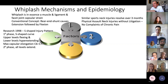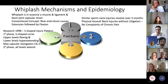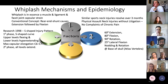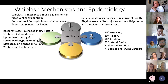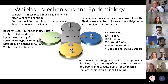Similar injuries in sportsmen and women tend to resolve over three months, and in cases of physical assault where there's no litigation, there are no particular complaints of chronic pain. The range of movement in the neck is 60 degrees of extension, 80 degrees of flexion — you should almost be able to touch your chin on your chest — 90 degrees of rotation, and 25 degrees of lateral flexion, with nodding and rotation taking place mainly at the base of the skull on the atlas vertebra. In Lithuania, there's no expectation of symptoms or disability, and only a minority of car drivers are insured for personal injury.